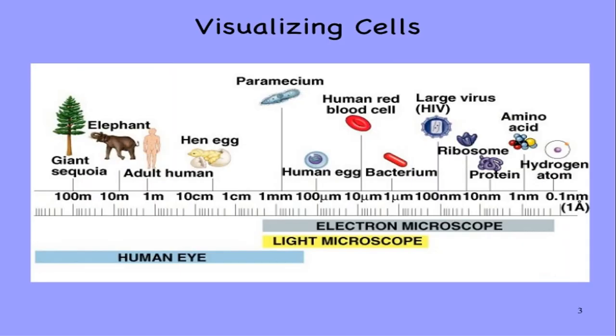Now what is the need of microscopy? Look at this image. In this image the range of human eye is given that we can see up to 1 millimeter. The lowest we can see is paramecium.